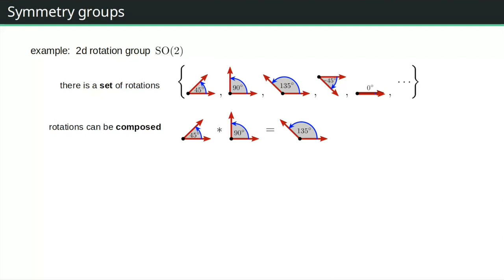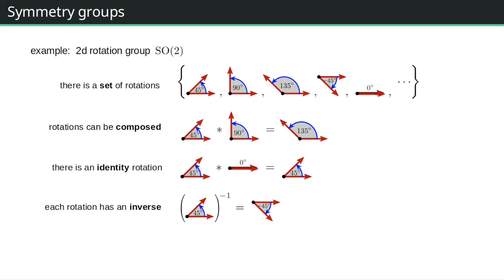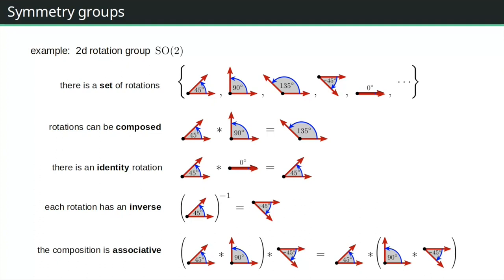We can take two rotations and compose them to get a new rotation. This composition must satisfy certain properties. First, there must be an identity element — for rotations, that would be rotation by zero degrees. Composing any rotation with the zero-degree rotation gives back the same element. We also need an inverse — rotating forward and then rotating backward cancels out. Finally, the composition must be associative.